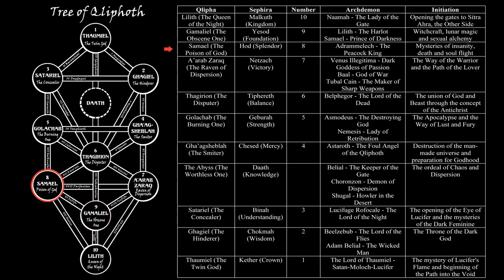The third initiation is that of Samael, the Poison of God. The name Samael is confusing here, because the ruling god is not Samael the Prince of Darkness, but Adramelech, the Peacock King. This Qliphah corresponds to Hod, Splendor, and its initiation is about the mysteries of insanity, death trances, and soul flight.